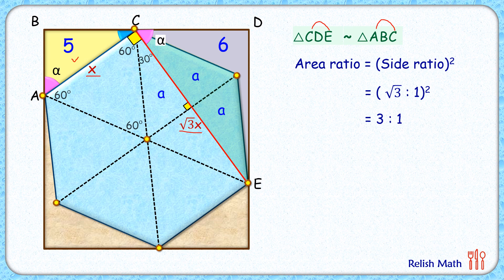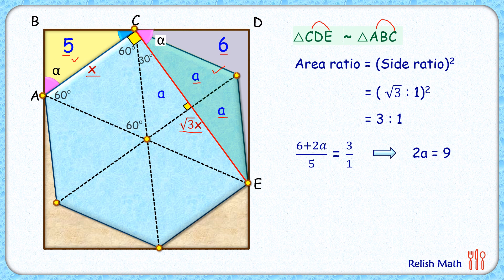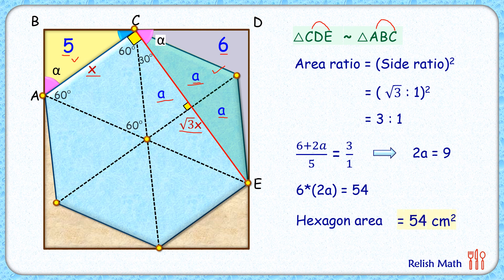So the area ratio is (√3)² to 1², which is 3 to 1. The area of the yellow triangle is 5 and the area of the red triangle is 6 plus 2A. Setting up the proportion: (6 + 2A) / 5 = 3 / 1, and solving gives 2A = 9. Since 2A represents the area of one equilateral triangle, multiplying by 6 gives the area of the hexagon: 6 × 9 = 54 cm². That's our answer.